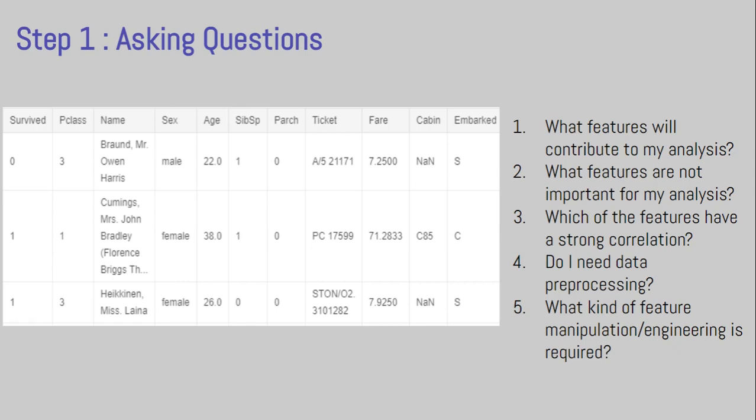Analyze it and tell us how we can be in profit next year. Obviously the second scenario is much more difficult because you have to think and ask the correct questions. So for the Titanic dataset that we worked on — if that dataset is in front of you, some example questions could be: what features or columns will contribute to my analysis, what features are not important, which features have a strong correlation with my target variable, do I require data pre-processing, and if so what kind of feature manipulation or engineering is required.